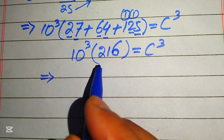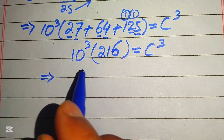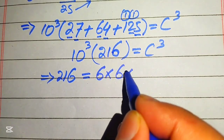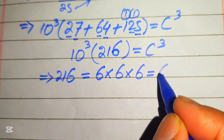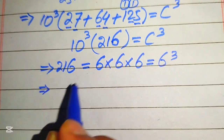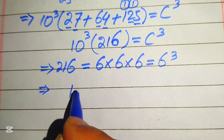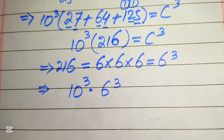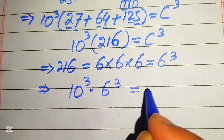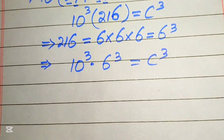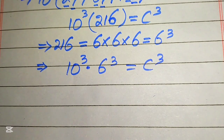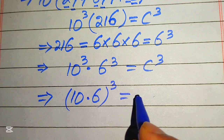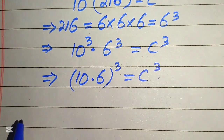We express 216 in cubic form: 216 equals 6 multiplied by 6 multiplied by 6, which equals 6 cubed. Replacing 216 with 6 cubed, we have 10 cubed multiplied by 6 cubed equals C cubed. On the left-hand side, we combine the cubes of these two values to write it as (10 multiplied by 6), whole cubed, equals C cubed.